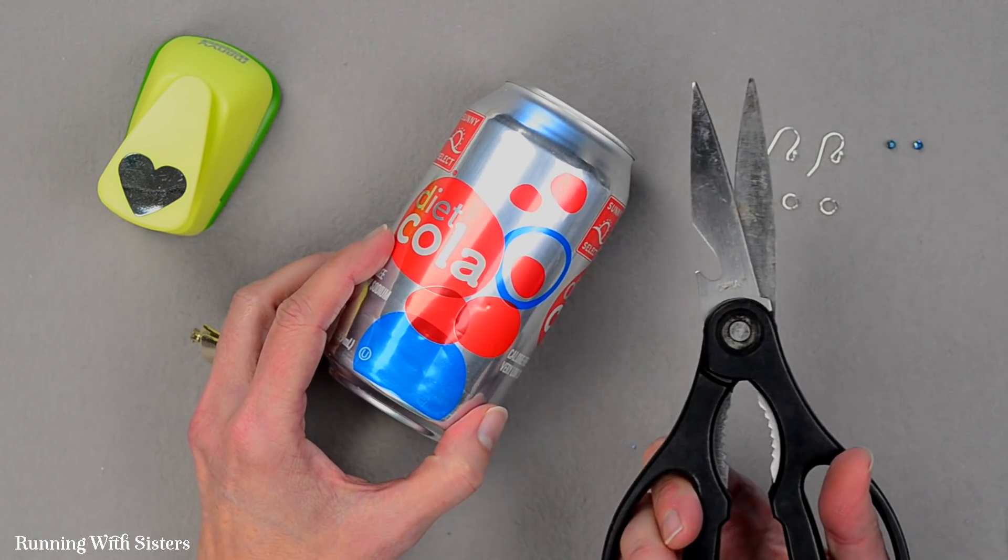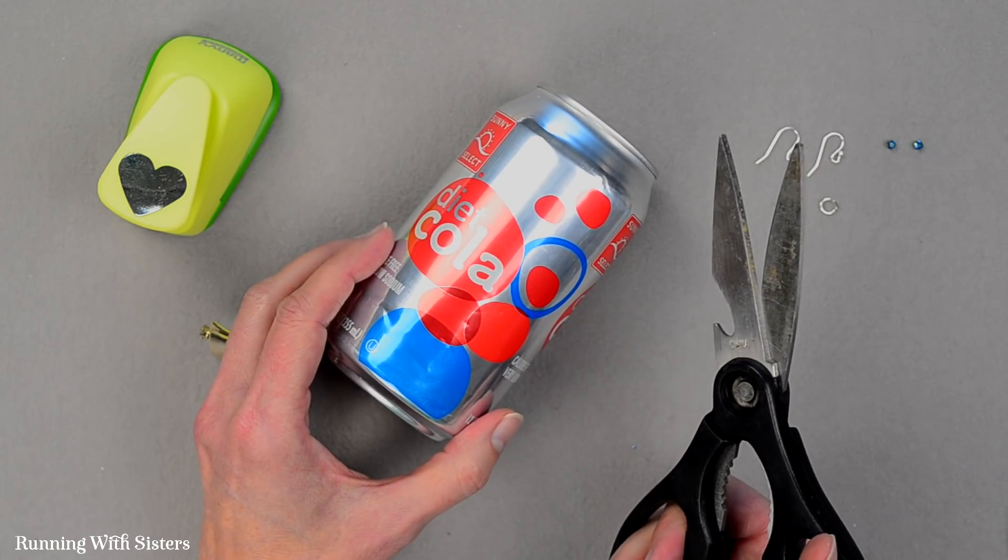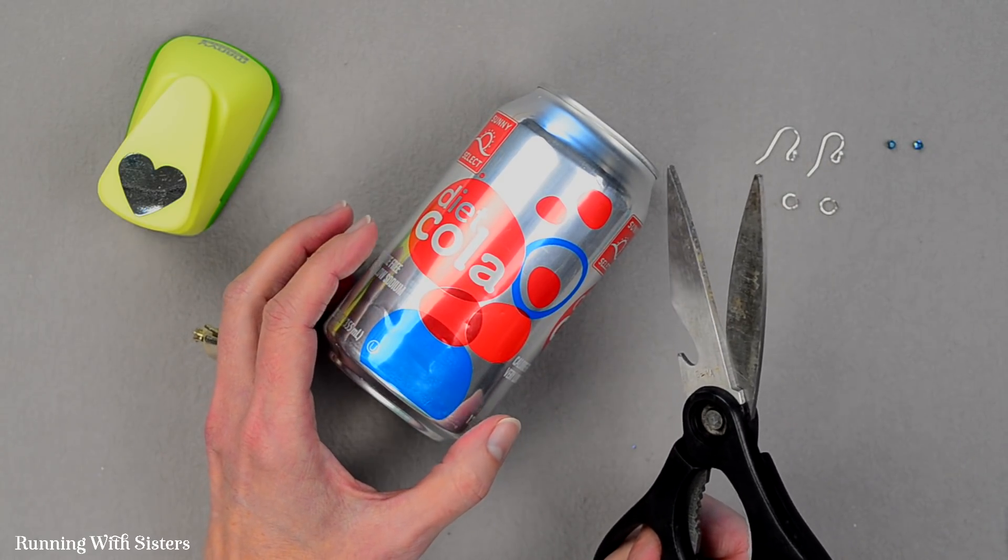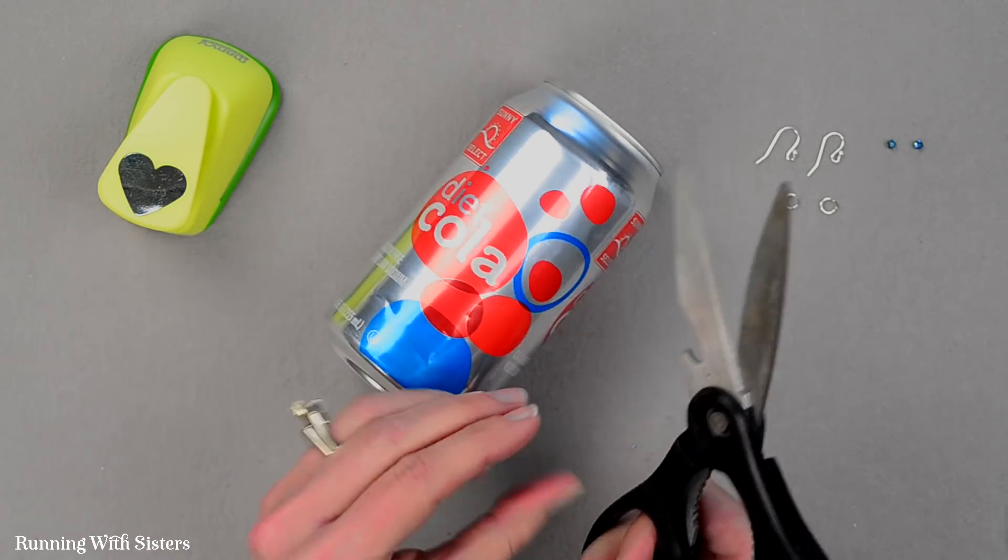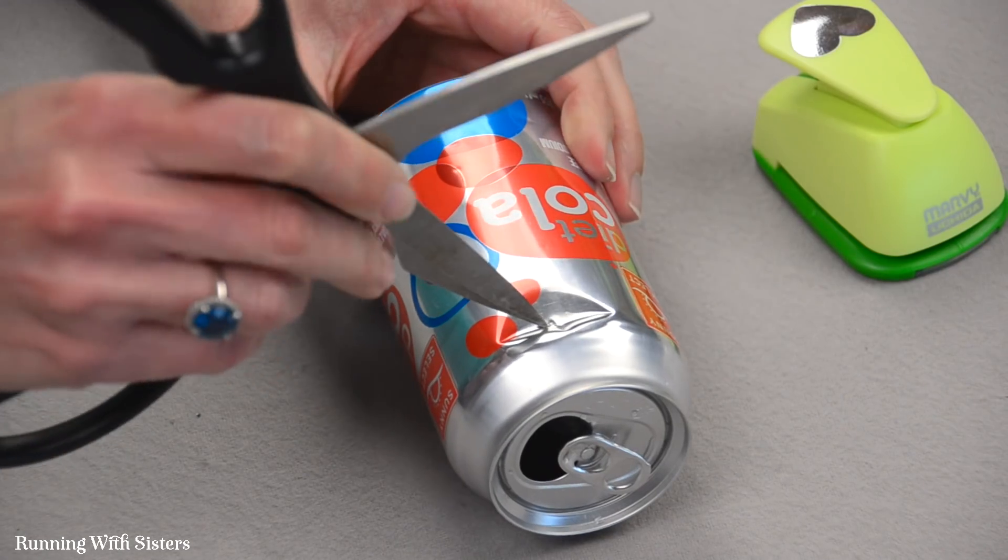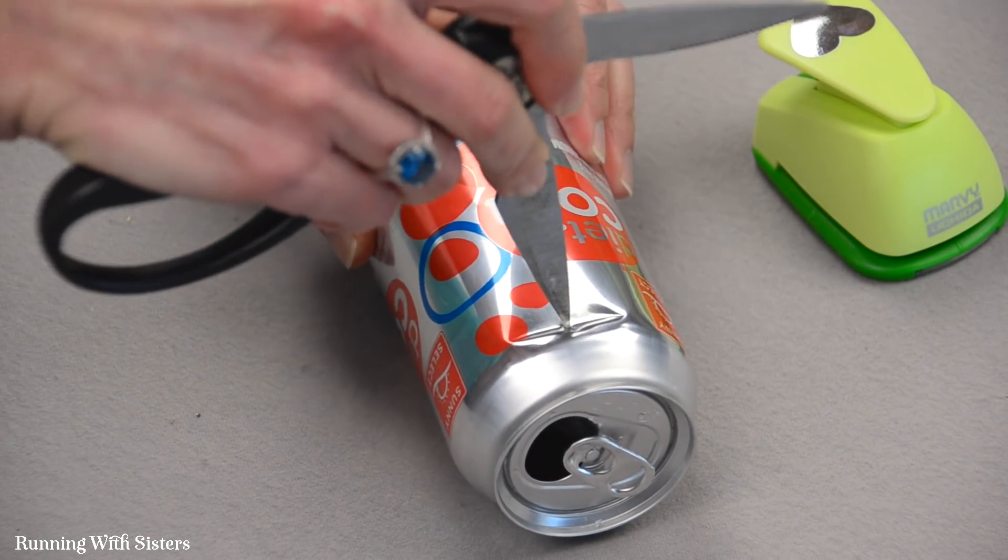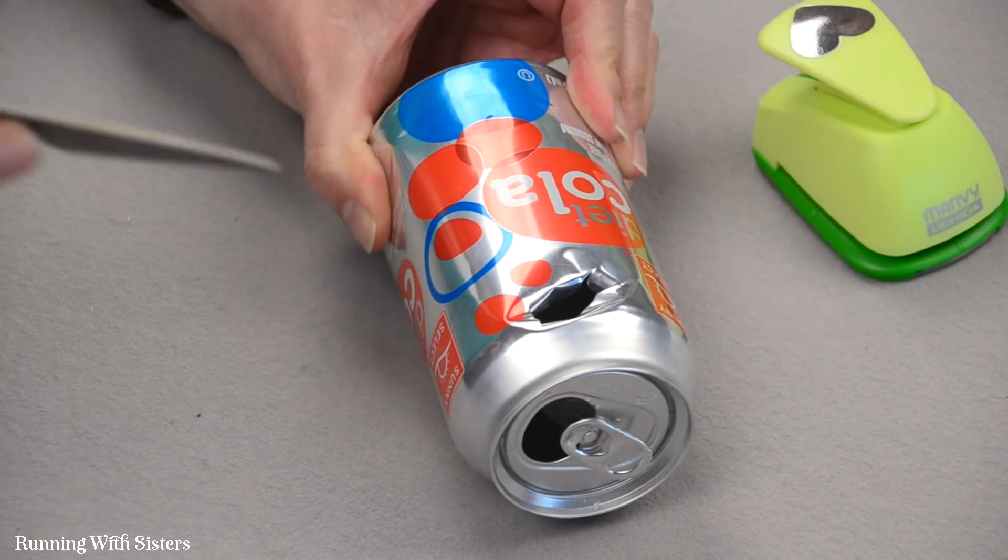We rinsed out our can and there's a little bit of fluid left in it but that's okay. We've got kitchen scissors and we're just going to dive in and stab a hole into the side of this can to get started. It looks scary but really it's not. I'm going to open them up and very carefully punch a hole right in the top of the can like that.